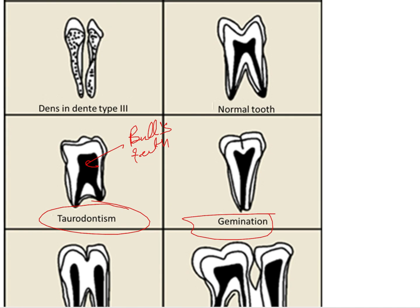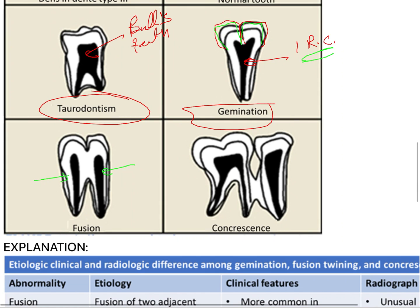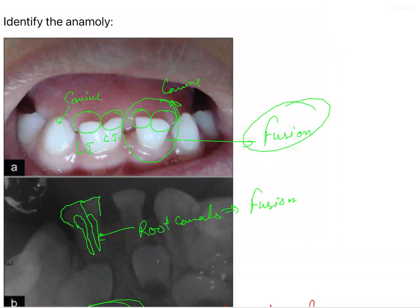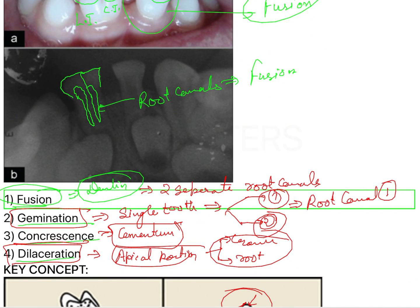In germination, only one root canal is present, but in the mouth you can see two crowns — that helps you identify germination and differentiate it from fusion. Fusion will show two separate roots with two separate root canals visible on the radiograph. For concrescence, all tissues are different; only the outermost cementum layer is attached to each other. Coming back to the question, the anomaly here is very easy to identify — it is none other than fusion, so option one is correct.